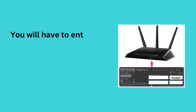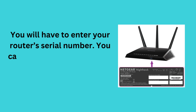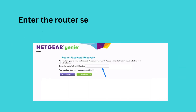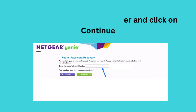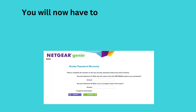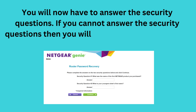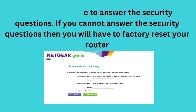You will have to enter your router's serial number. You can find it printed on a label at the back or under the router. Enter the router's serial number and click Continue. You will now have to answer the security questions. If you cannot answer the security questions, you will have to factory reset your router.